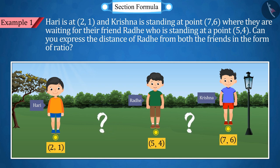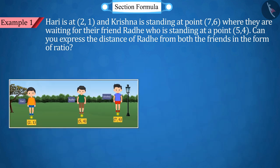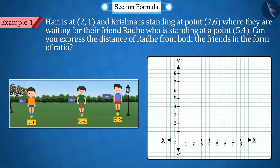Can you express the distance of Radhe from both friends in the form of a ratio? Let's see it in the graph and set the coordinates.